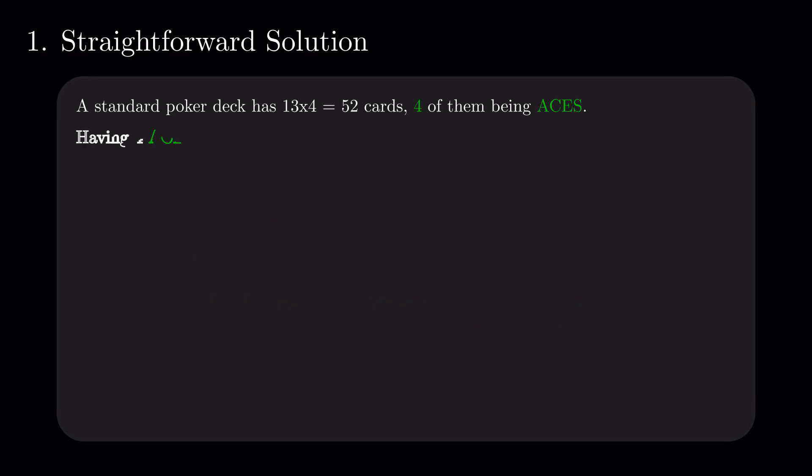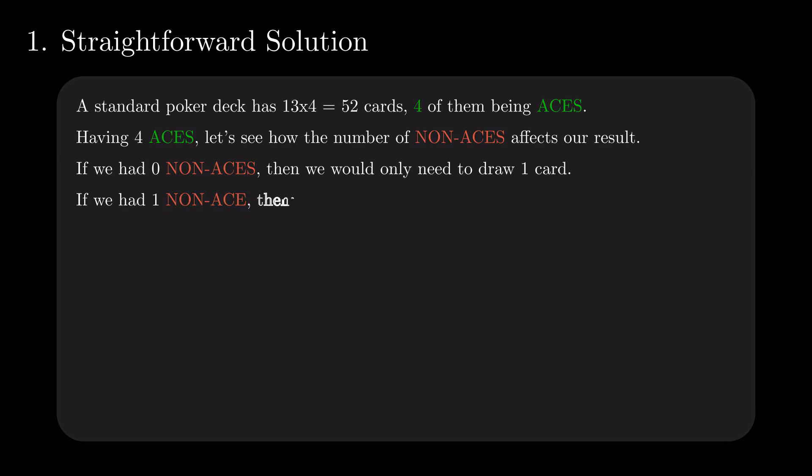If we have zero cards besides the aces, we would need to make one draw before seeing one. If we add one card that's not an ace, then...